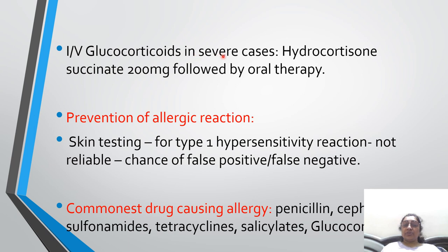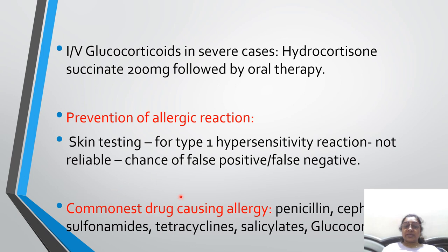Intramuscular glucocorticoid in severe cases: hydrocortisone succinate 200 mg, followed by oral therapy like prednisolone 20 mg four times a day. For prevention of allergic reaction, skin testing for type 1 hypersensitivity reaction can be done, but this test is not reliable and false positive or false negative results can occur, so it is not 100% valid. The most common drugs causing hypersensitivity reactions are penicillin, cephalosporin, sulfonamide, tetracycline, salicylate, and glucocorticoid — all very prone to causing hypersensitivity reactions.